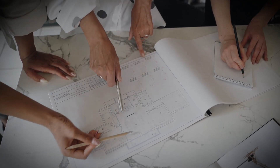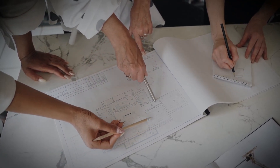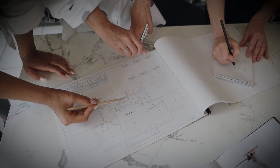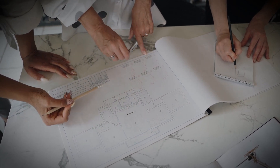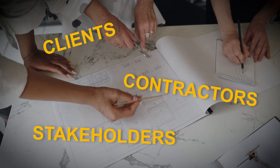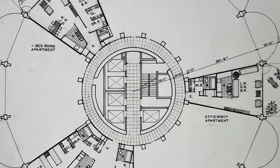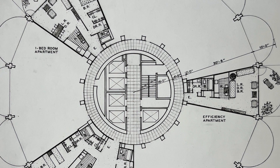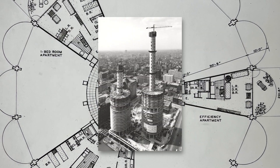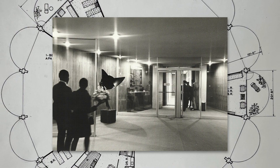Architectural graphic representation is a critical aspect of the design process as it allows architects and other professionals to share their ideas and concepts with clients, contractors, and other stakeholders. Through graphic representation, architects can convey important information about the building's function, aesthetic, and technical details such as structural systems, plumbing, and electrical layouts.